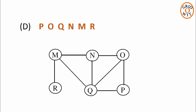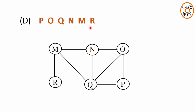Now let us check the traversal sequence given in option D. First, node P is traversed. Now the direct neighbors of node P are O and Q. These 2 direct neighbors of node P should be traversed first in any order before going to the next level of neighbors. In the traversal sequence, next node is O — no problem, O can be traversed. Next node is Q — again no problem, Q can be traversed. As both the neighbors of node P are traversed, we will move to the next level of neighbors.